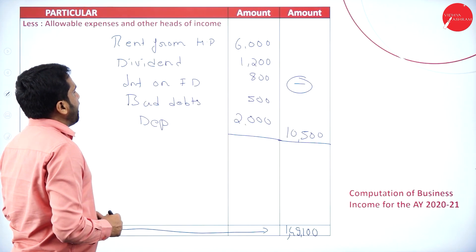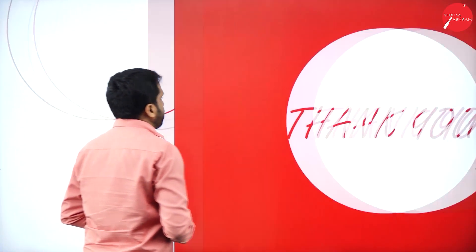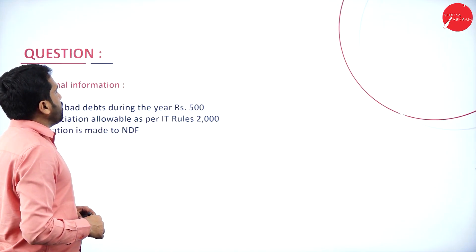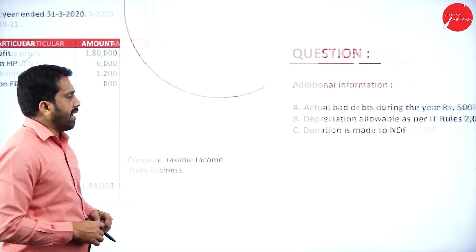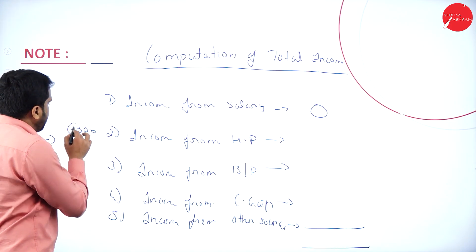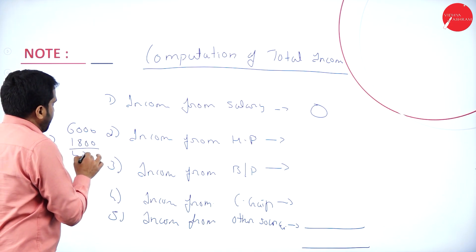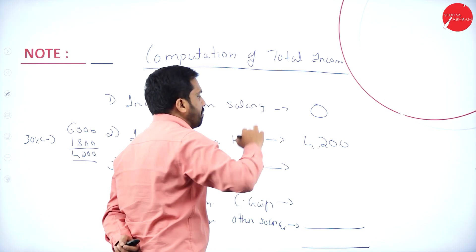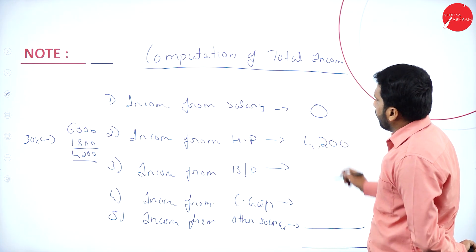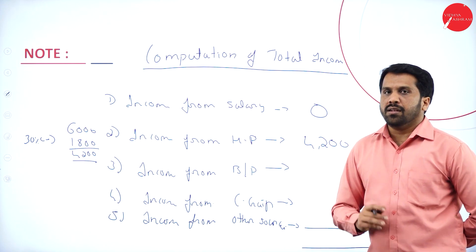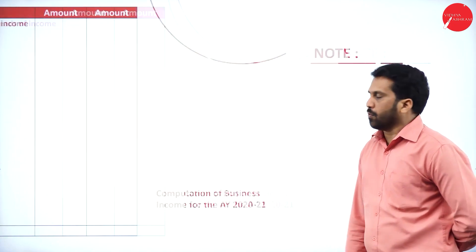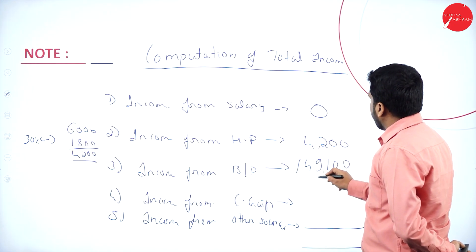In this, income from salary — you are doing business, so income from salary is blank. Income from house property: rent from house property is 6,000. We don't take 6,000 directly — 6,000 minus 30% standard deduction of 1,800 gives 4,200. So income from house property is 4,200. There is no loan on house property. Income from business or profession: we just calculated — 1,49,100.